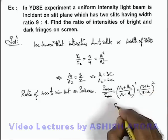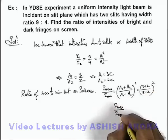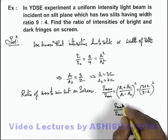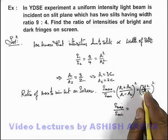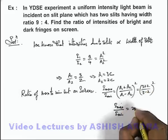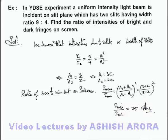And the values of ratio of intensities of bright and dark fringes, or that of maximum minimum intensities, will be 5 by 1 squared, that is 25. That will be the answer to this problem.